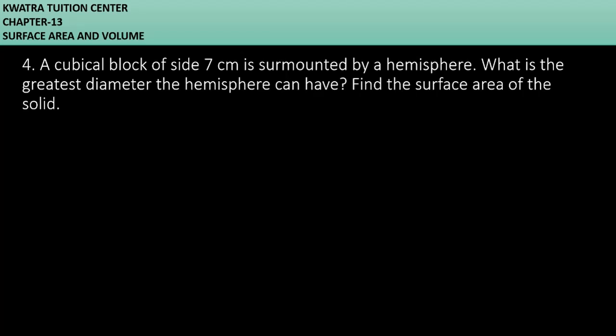Let's start with question number 4. It says a cubical block of side 7 cm is surmounted by a hemisphere. What is the greatest diameter the hemisphere can have? Find the surface area of the solid.